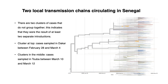For Africa, we have updates for Senegal and the Democratic Republic of the Congo. When looking at the tree, we see two clusters of cases from Senegal. These clusters do not group together, which indicates that they were the result of at least two separate introductions. Each of these clusters consists of closely related cases sampled across a short period of time, consistent with local transmission.